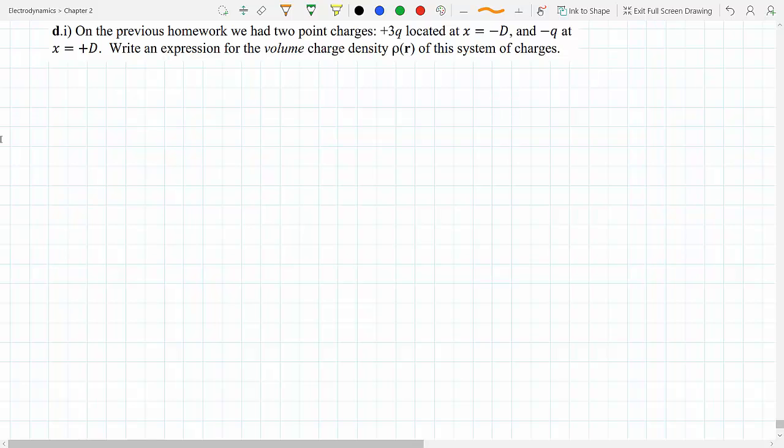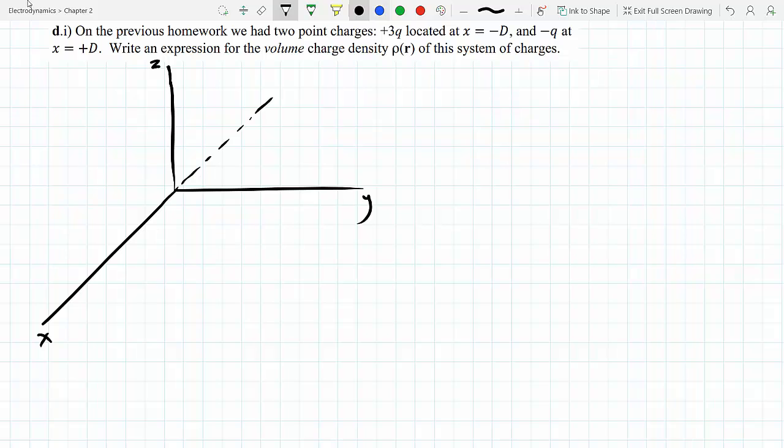Let's draw a figure to represent what this looks like. Here's the x-axis, y-axis, and z-axis. You have a charge of 3q located here at minus d. The distance is minus d from here to there. And at d you have minus q.